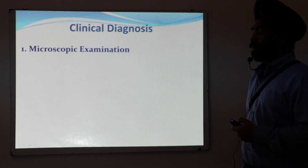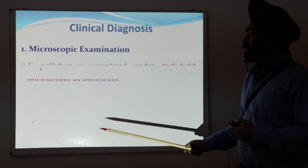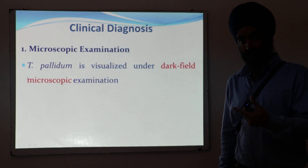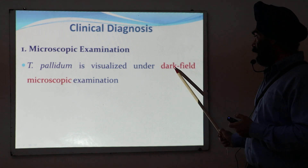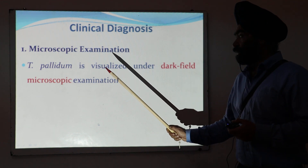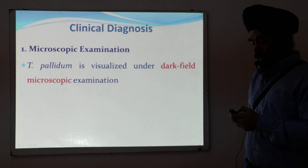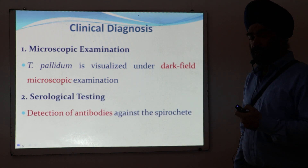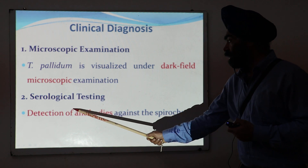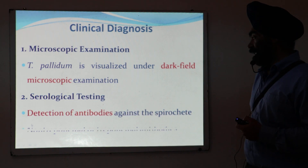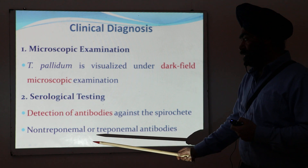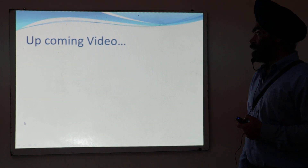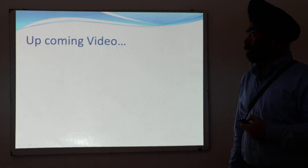For diagnosis of syphilis, one mechanism is microscopic examination — you take a sample from the site of infection, make a smear, examine under dark-field microscopy, and you can see Treponema pallidum. The second is serological testing, where antibodies against the spirochete are determined. There are two kinds of antibodies: non-treponemal and treponemal antibodies.